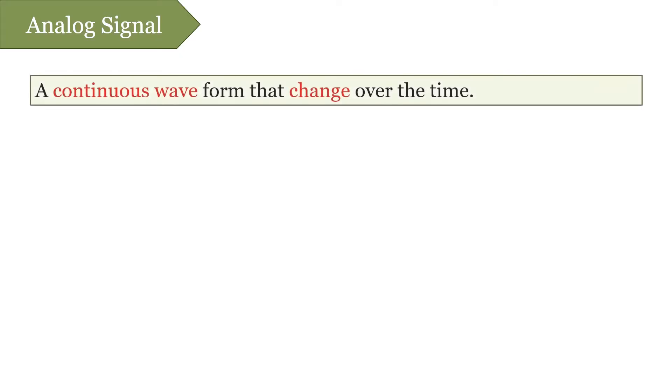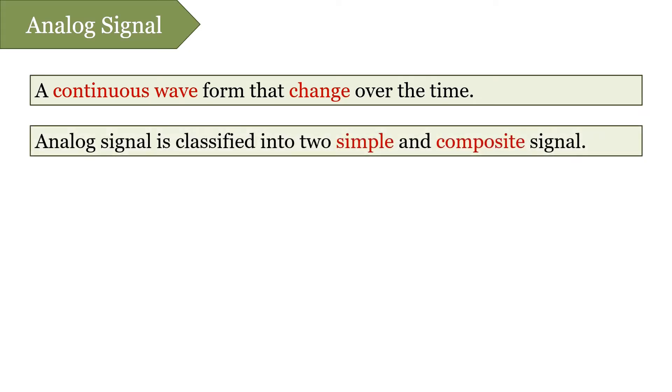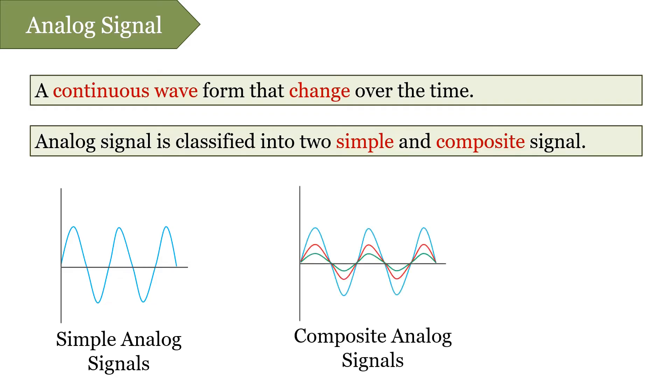Let's proceed with the analog signal. Analog signal is represented by a continuous waveform that keeps changing its frequency, amplitude, and phase over time. Now even an analog signal is of two types: simple analog signal and composite analog signal. Simple analog signal is just a sinusoidal waveform that can't be decomposed further. On the other hand, composite analog signal is a combination of multiple sine waves.